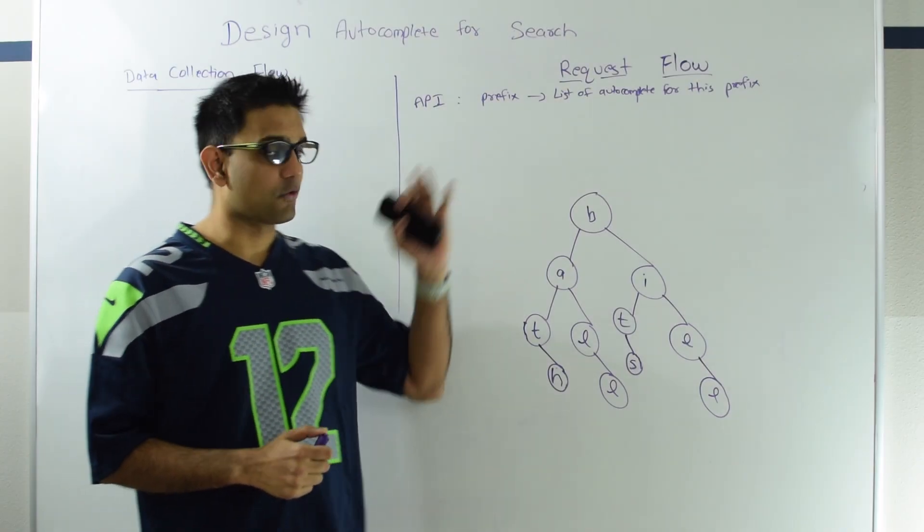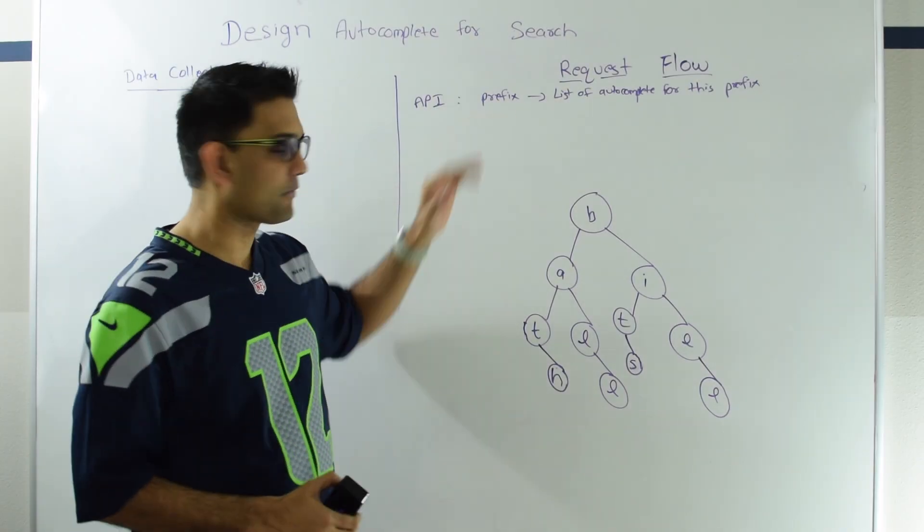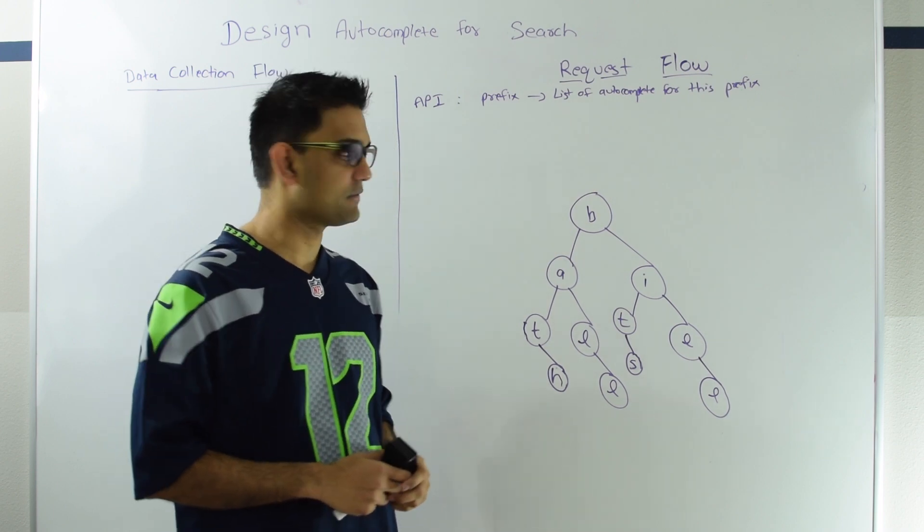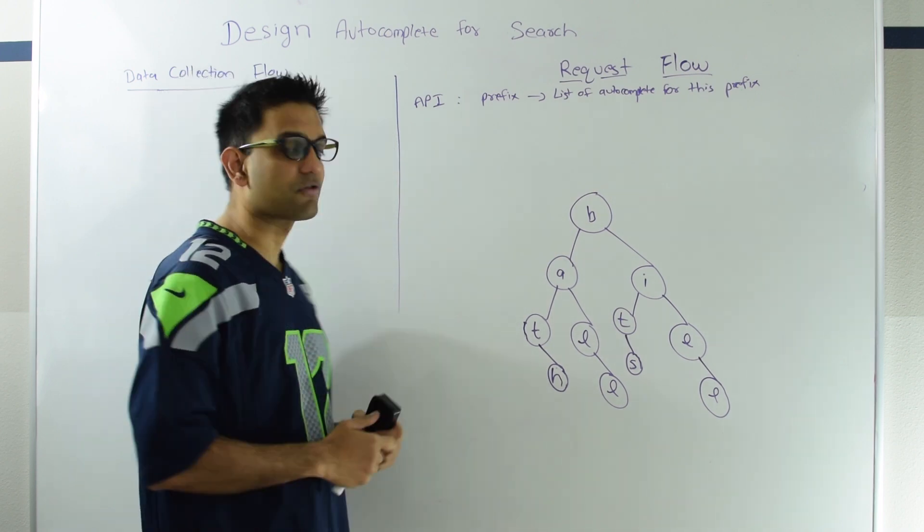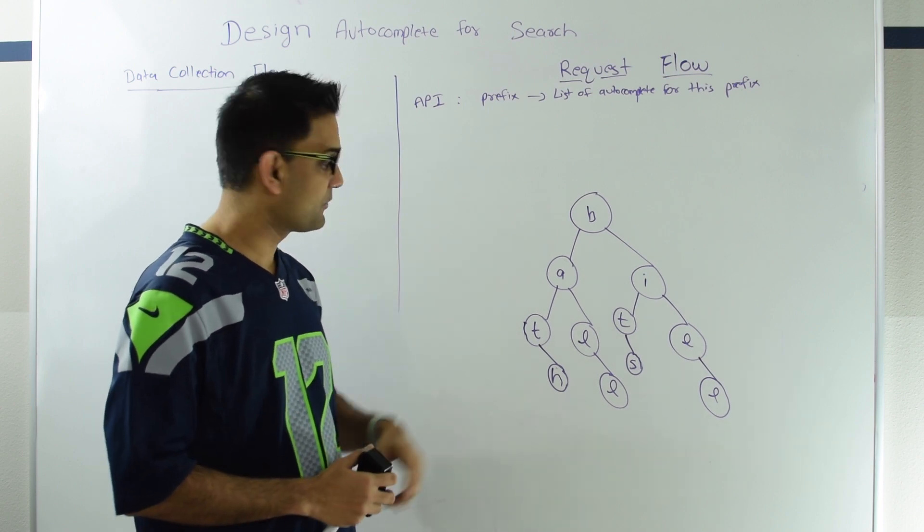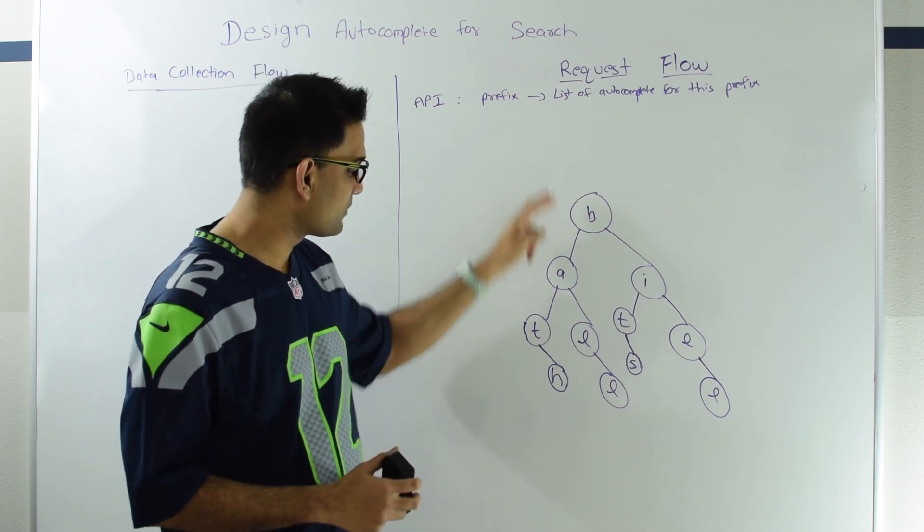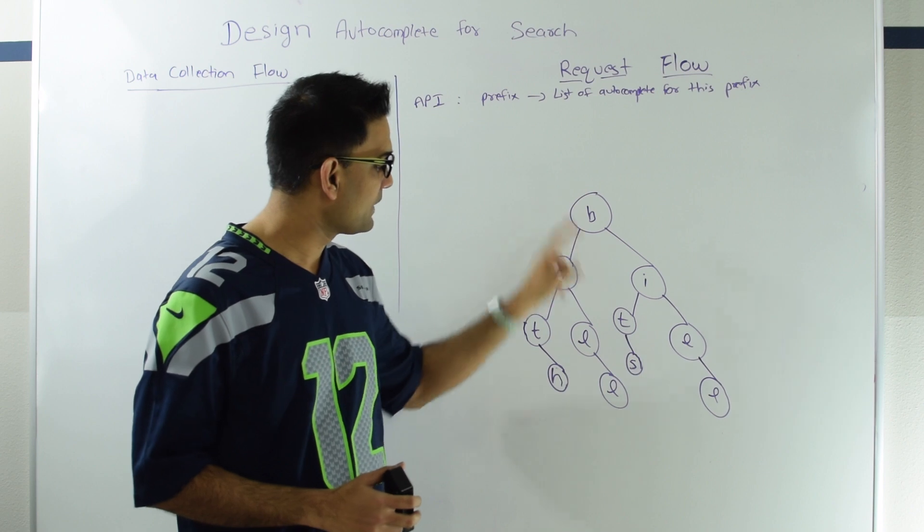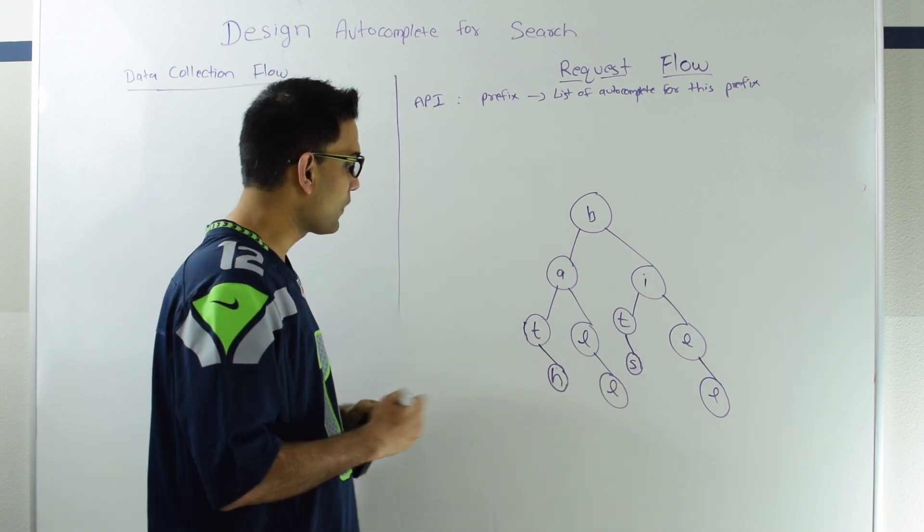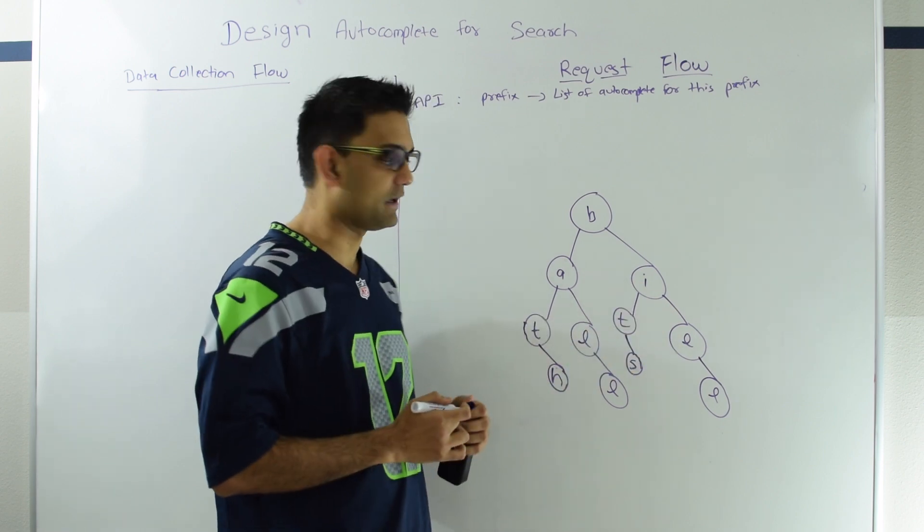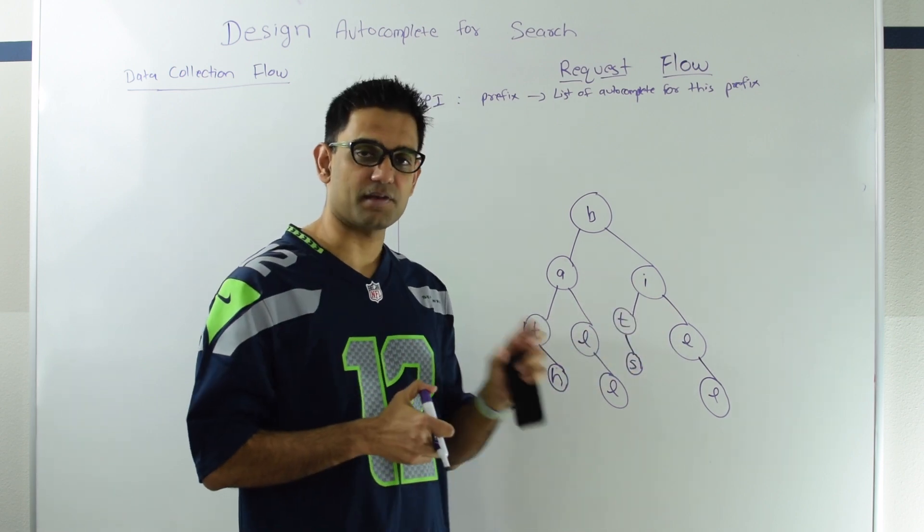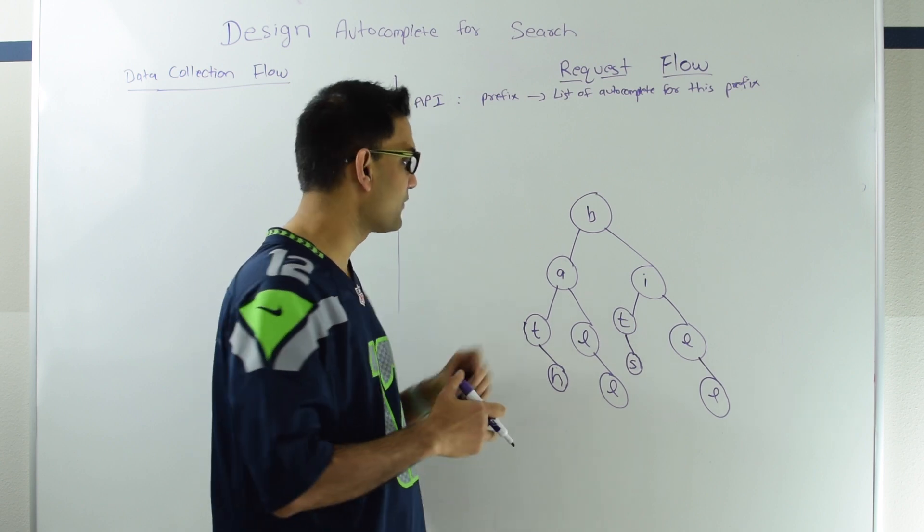The API for the request flow is very simple: you're given a prefix and you need to return a list of autocomplete words for this prefix. Let's talk about the trie here. Suppose I have a bunch of words and I create a trie for them, for example bat, bath, ball, bit, bits and bill.